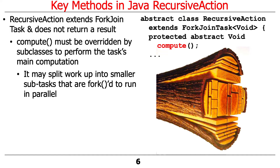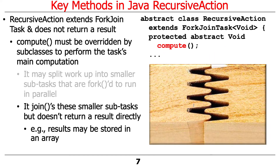If compute decides the task is small enough to run sequentially, it just goes ahead and computes it. Otherwise, it splits things up into smaller pieces. After those smaller pieces are done — and they can be done by other threads in the worker pool — compute will typically join all these smaller subtasks back together again, and then return.